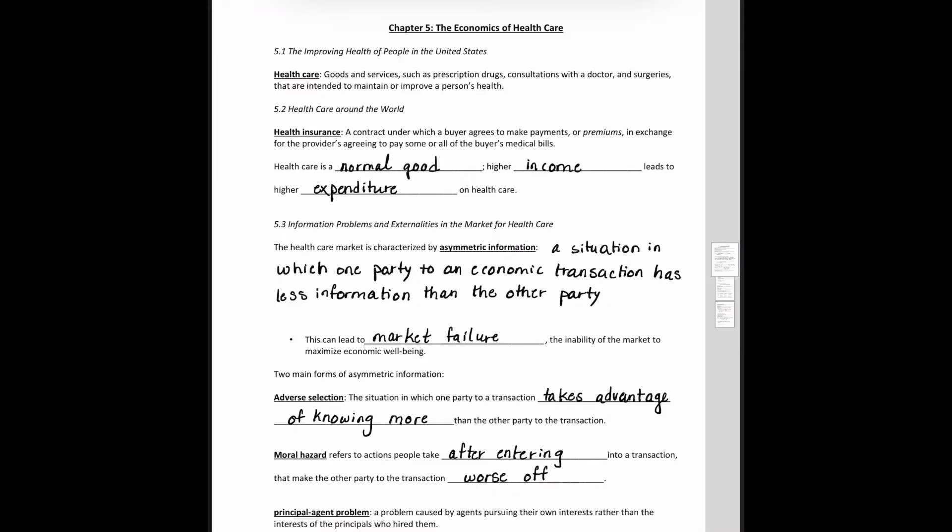In chapter 5 we'll be talking about the healthcare economy, but some of the terms we will be referencing do relate to what happened with the whole fiasco that occurred earlier this week. So, economics of healthcare. Firstly, we'll be talking about what is healthcare. We defined it here as goods and services, prescription drugs, consultations with doctors, surgeries, etc. They're intended to maintain or improve a person's health.